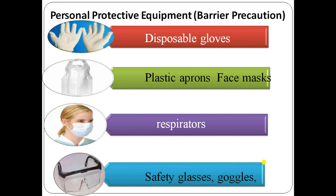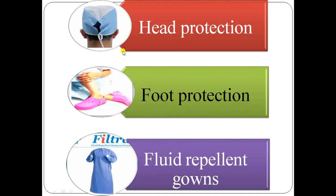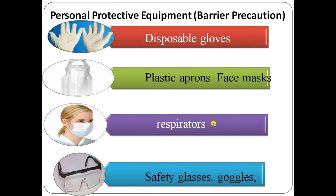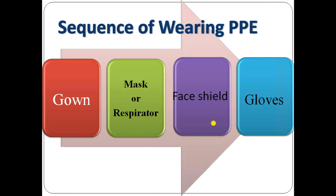Personal protective equipment — also called barrier precautions — includes disposable gloves, plastic apron or face mask, respirators, safety glasses and goggles, head protection, foot protection, and fluid-repellent gowns.